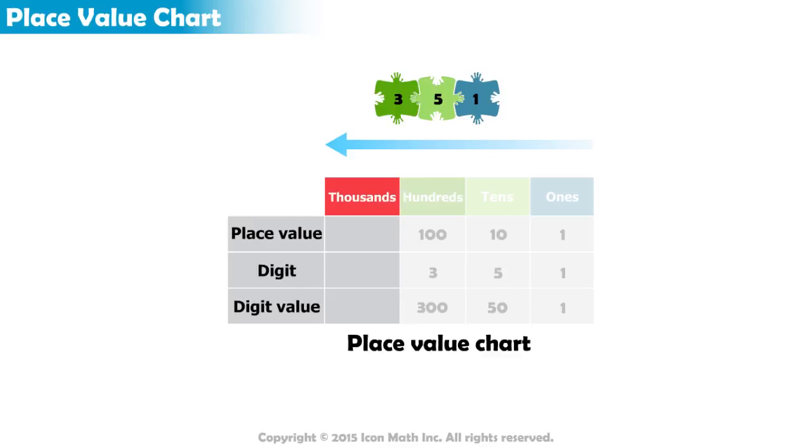Now comes the thousands place, which has a value of 1000. Let's put the digit 2 here and see what happens. Its value is now equal to 2000. We multiplied 2 by 1000 to get 2000.